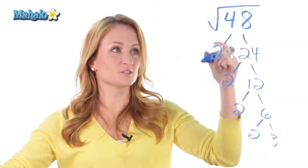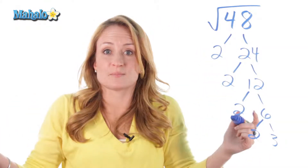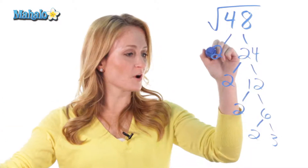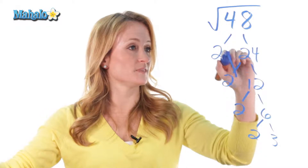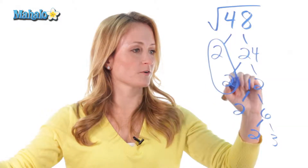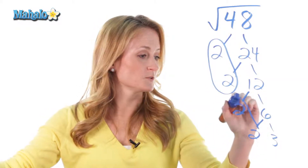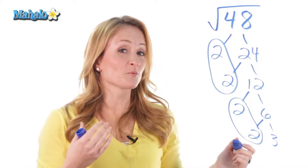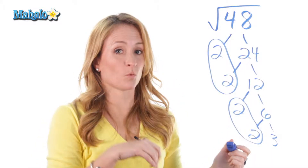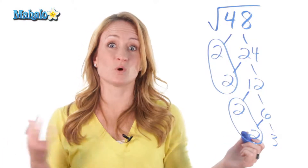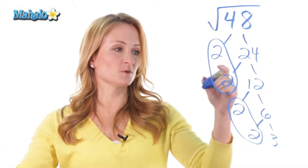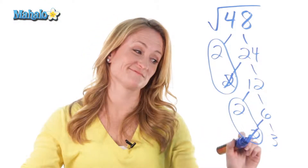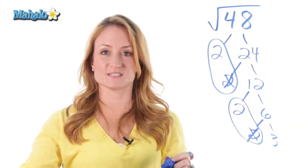Remember, that square root is considered like a trap, and in order to get out of it, you have to have a partner. So partner up wherever you can. These two 2's partner up, these two 2's partner up. Sorry — 3 has no partner. Remember the rule: with each pair, one gets out of the trap and one disappears. So this one gets out, this one disappears, this one gets out, this one disappears, and the 3 stays in.